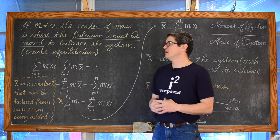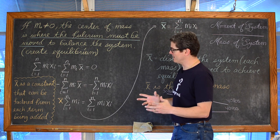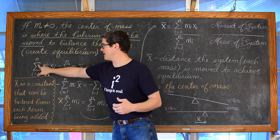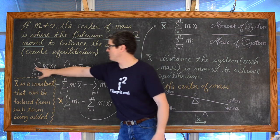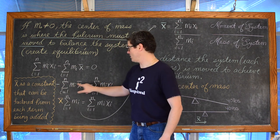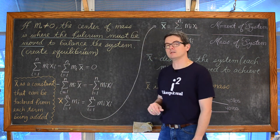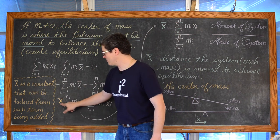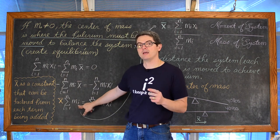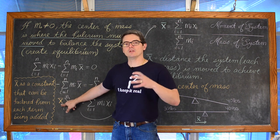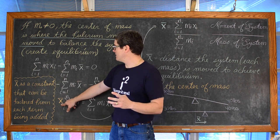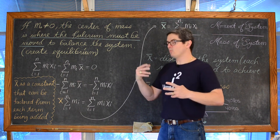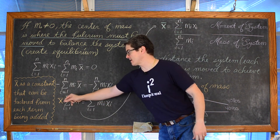Minus the summation where i goes from 1 to n of m sub i times x-bar — where does the fulcrum need to get moved along the x-axis to create equilibrium, so that the sum of all these moments equals 0. We're trying to solve for x-bar. We're going to subtract this term to the right-hand side, then divide both sides by negative 1. Now x-bar, which is a constant, can be pulled out front of the summation. You can't do the same with x sub i, because that is the distance that each of those individual masses are away from the origin.